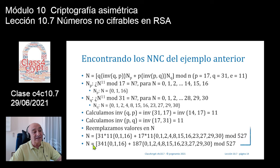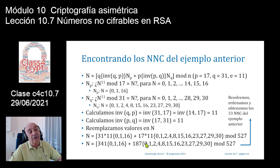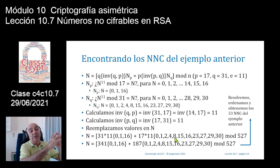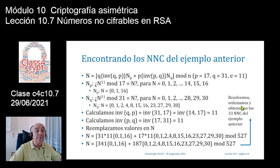Multiplicamos 31 por 11, que sale 341, con los valores {0, 1, 16}, y luego multiplicamos 17 por 11, que son 187, con los valores {0, 1, 2, 3, 4, ..., 30}. Hay que multiplicar 341 por cada NP y 187 por cada NQ, hacer la suma y reducir módulo 527. Ordenando de valor más pequeño a valor más grande, salen los 33 números que teníamos indicados en el ejemplo anterior.